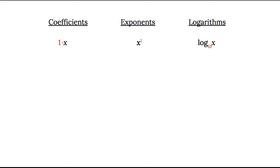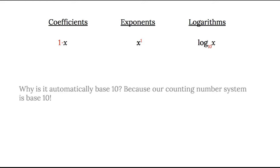You might be thinking, why is it 10 and not 1? Let's think about our counting system — what's the highest number that we count to before we group them up? That would be 10, because our number counting system is base 10. Every time we get to a group of 10, we group them back up and start over with one, two, three, four, and so on. That's why our common log is considered base 10.